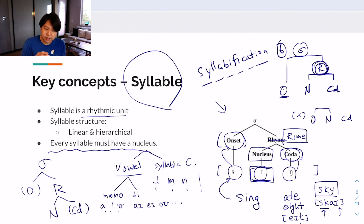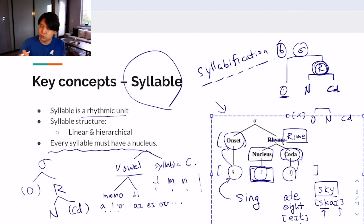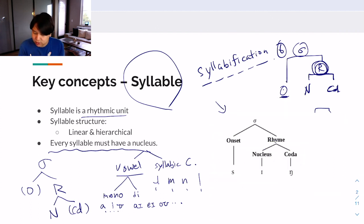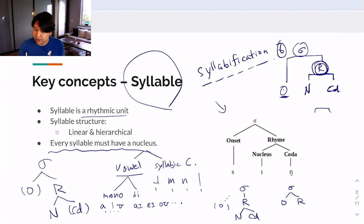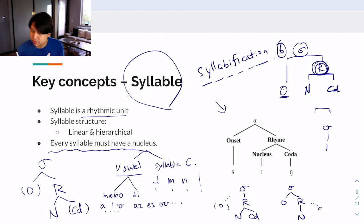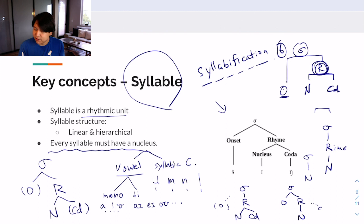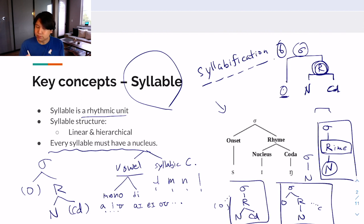Onset and coda are optional. If you don't have an onset, the rhyme connects directly to the syllable node. If you don't have a coda, it will look like onset and rhyme with only the nucleus below. If you lack both onset and coda, the syllable structure has only a rhyme node with the nucleus below it. You should still draw a rhyme, because the syllable is not just made of a nucleus — it is made of a rhyme that consists of a nucleus in this case. There are many different possible structures for a syllable.